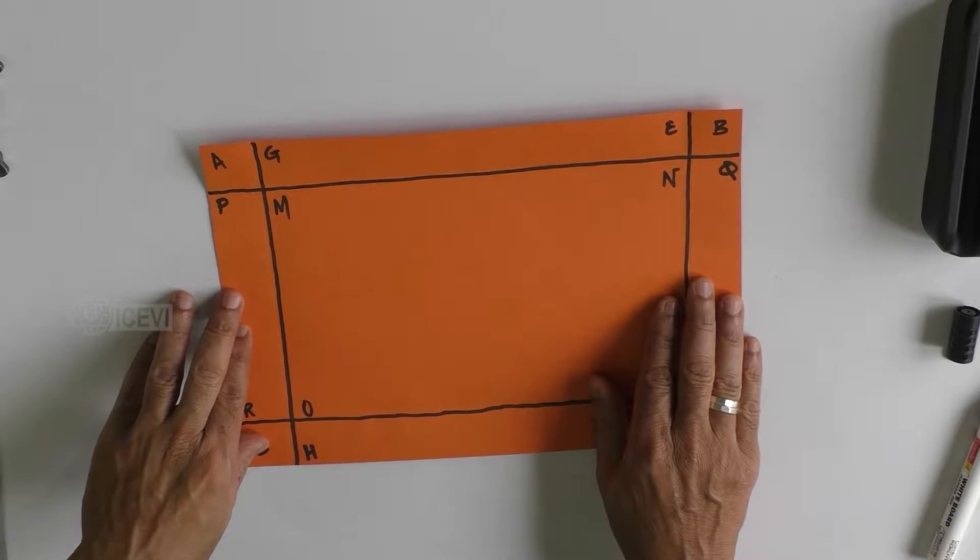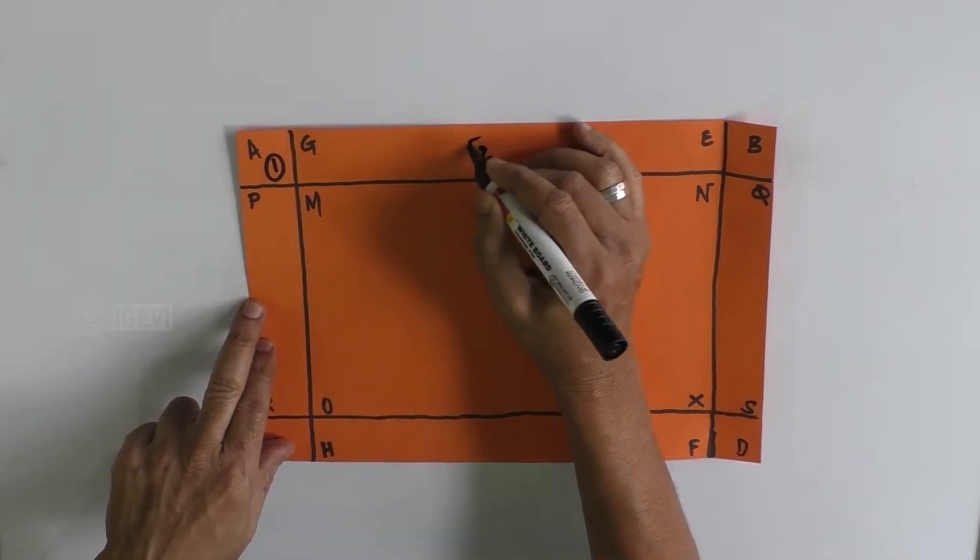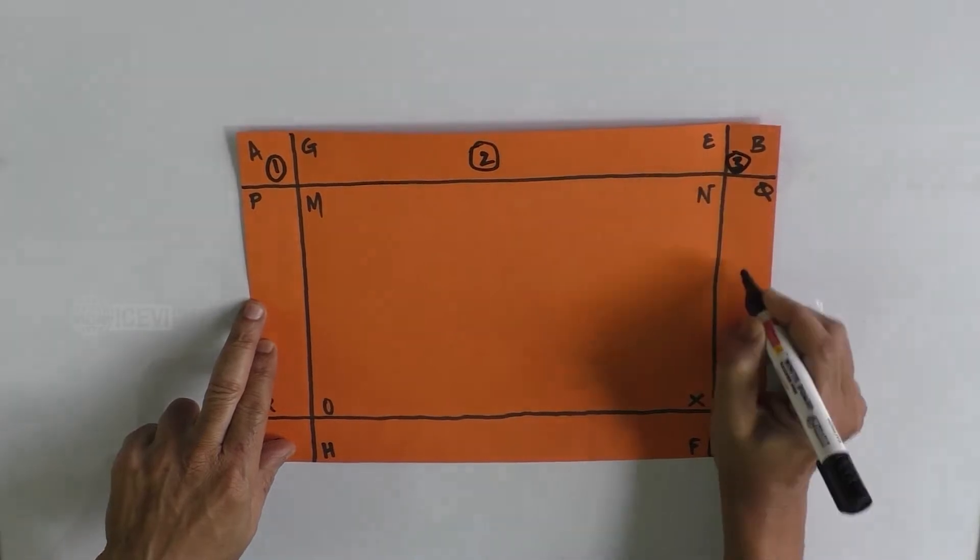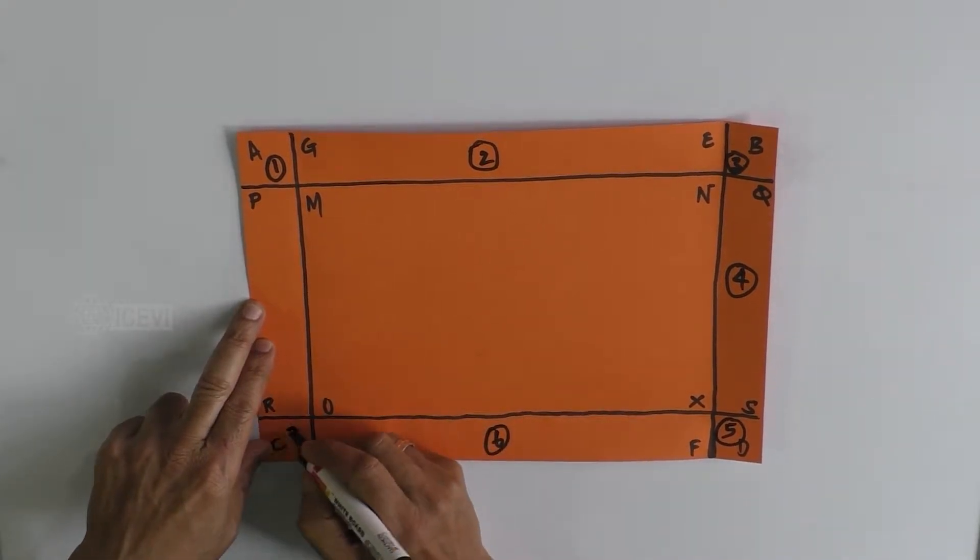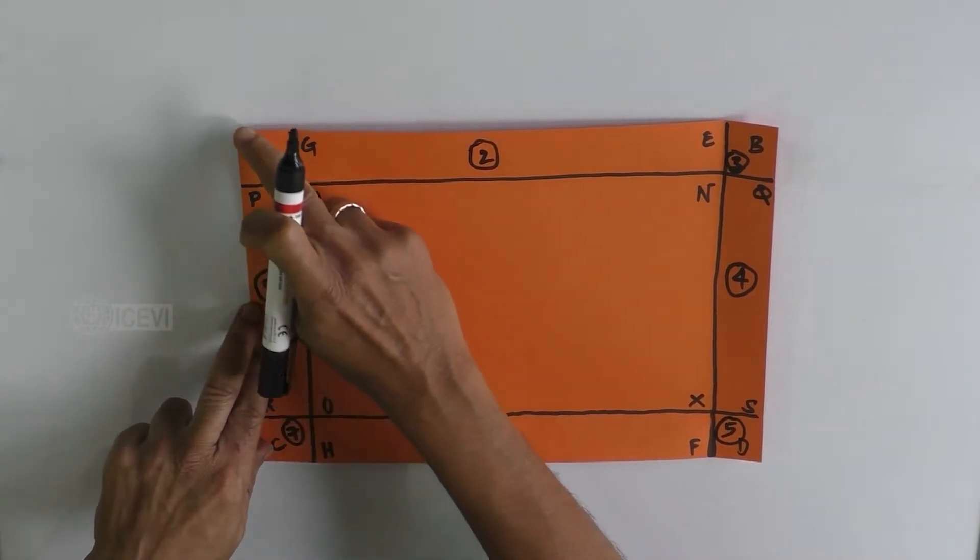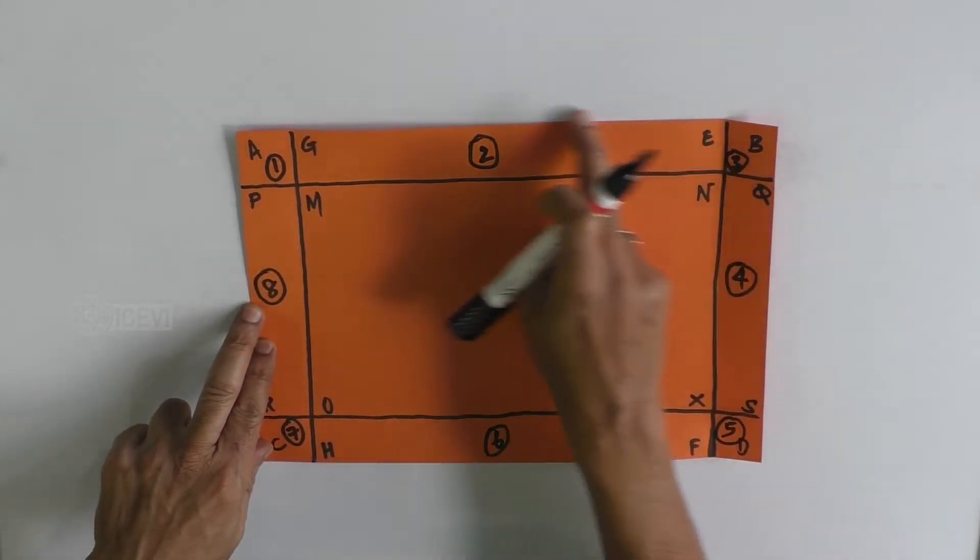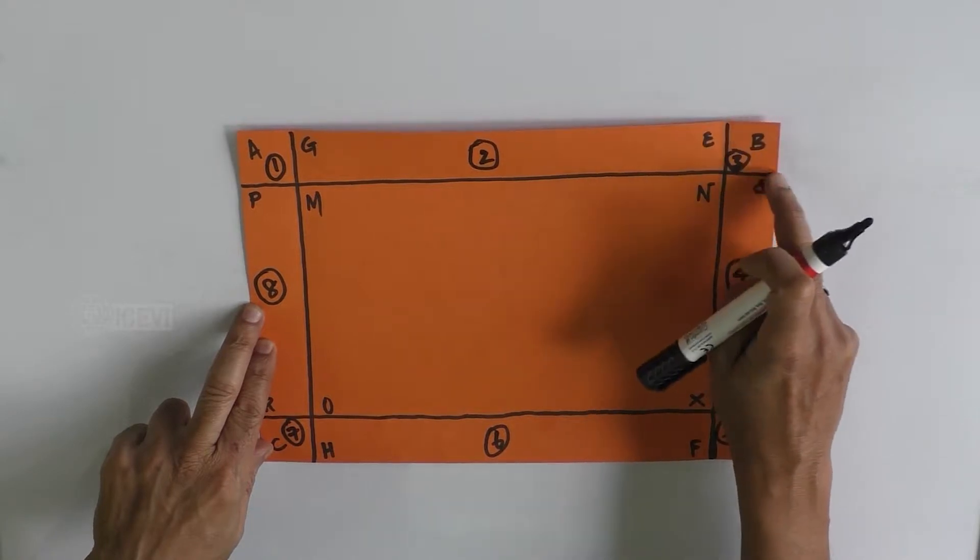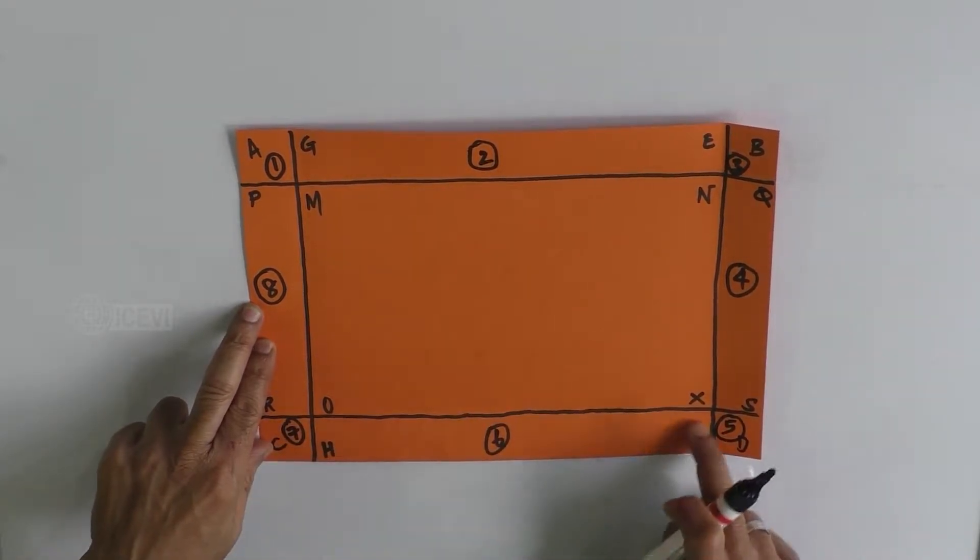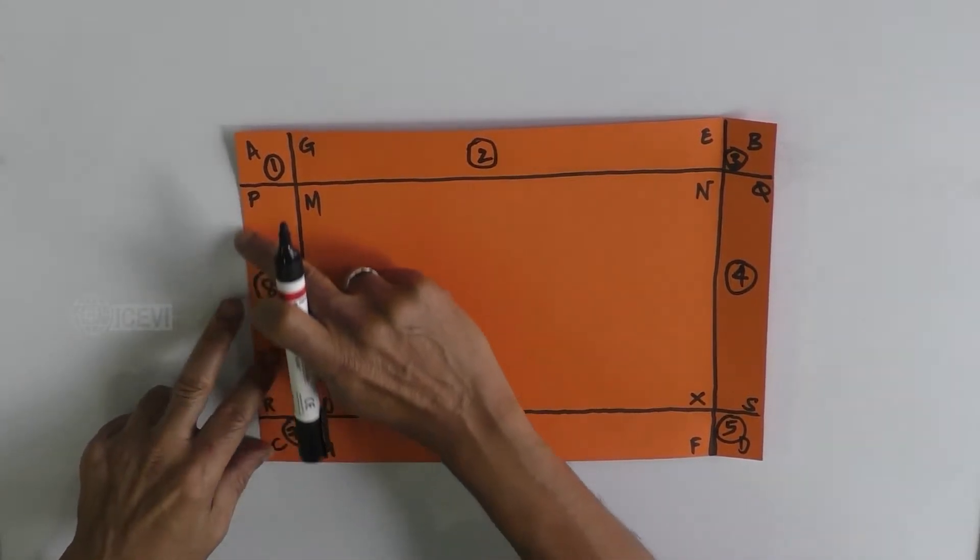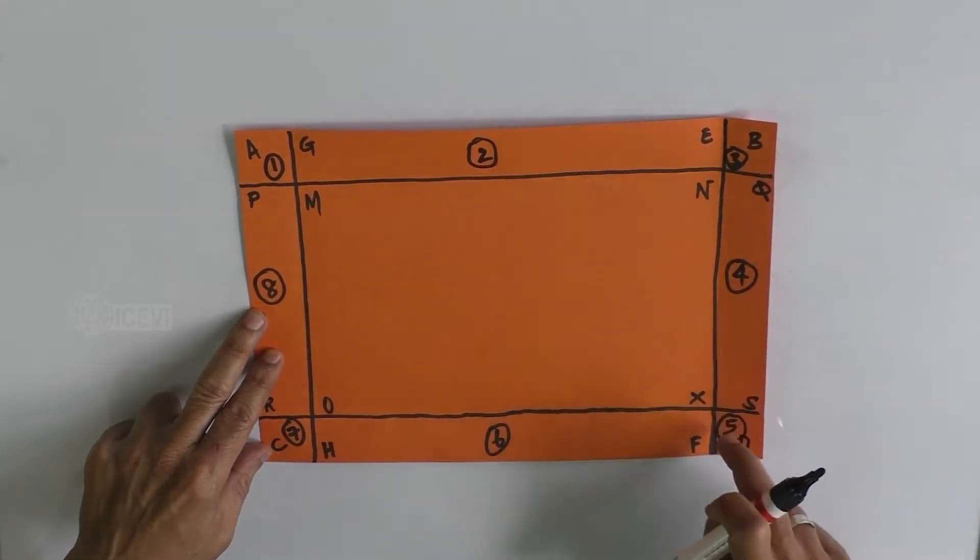So let us mark the different boxes as one, two, three, four, five, six, seven, and eight. First of all, let the child explore. Box one is a square, box two is a rectangle, box three is a square, box four is a rectangle, box five is a square, box six is a rectangle, box seven is a square, box eight is a rectangle.